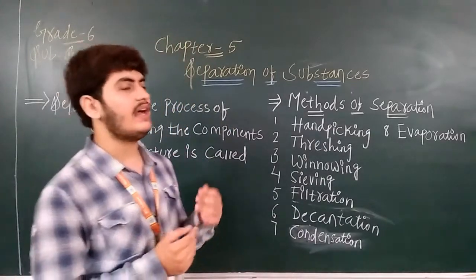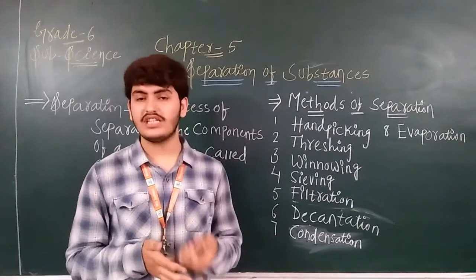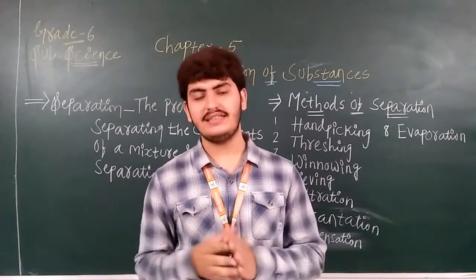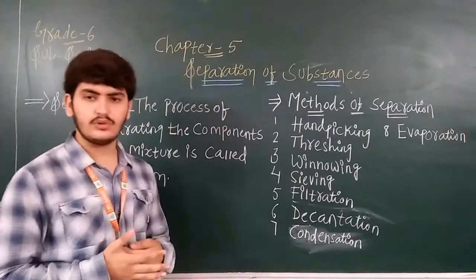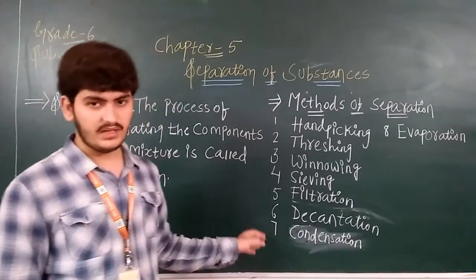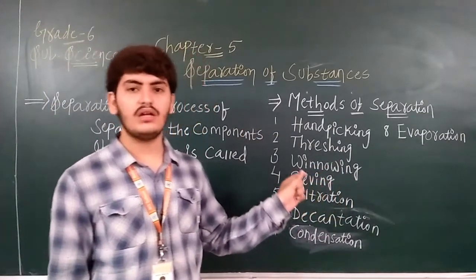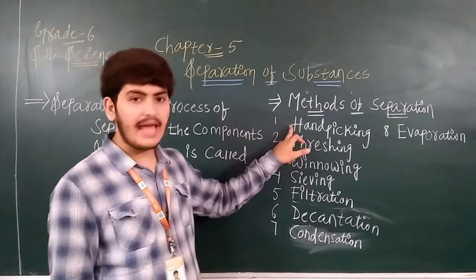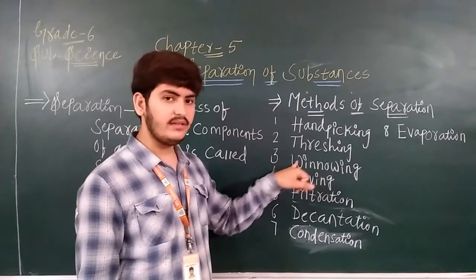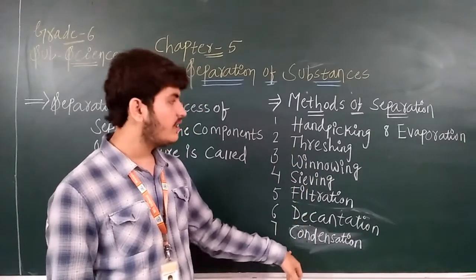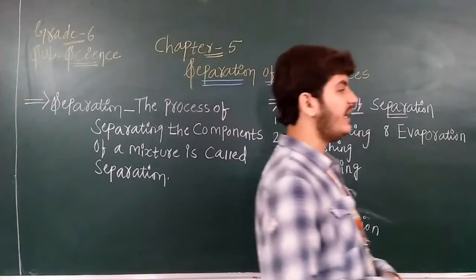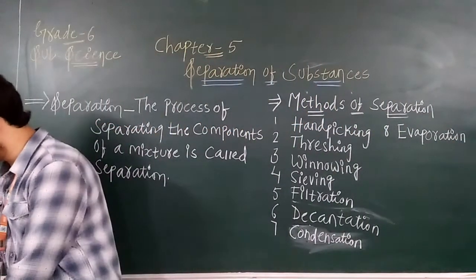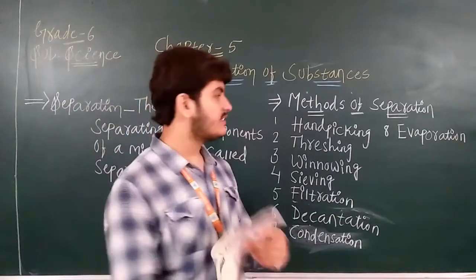There are many factors to separate things from each other, so there are different kinds of methods. There are total eight methods. The names of these eight methods you have to learn by heart because these are very important and in higher grades also these methods will come. The eight methods are: hand picking, threshing, winnowing, sieving, filtration, decantation, condensation, and evaporation. These are the eight methods with which we can separate a substance. Now I am going to explain all these methods in detail, starting with hand picking.